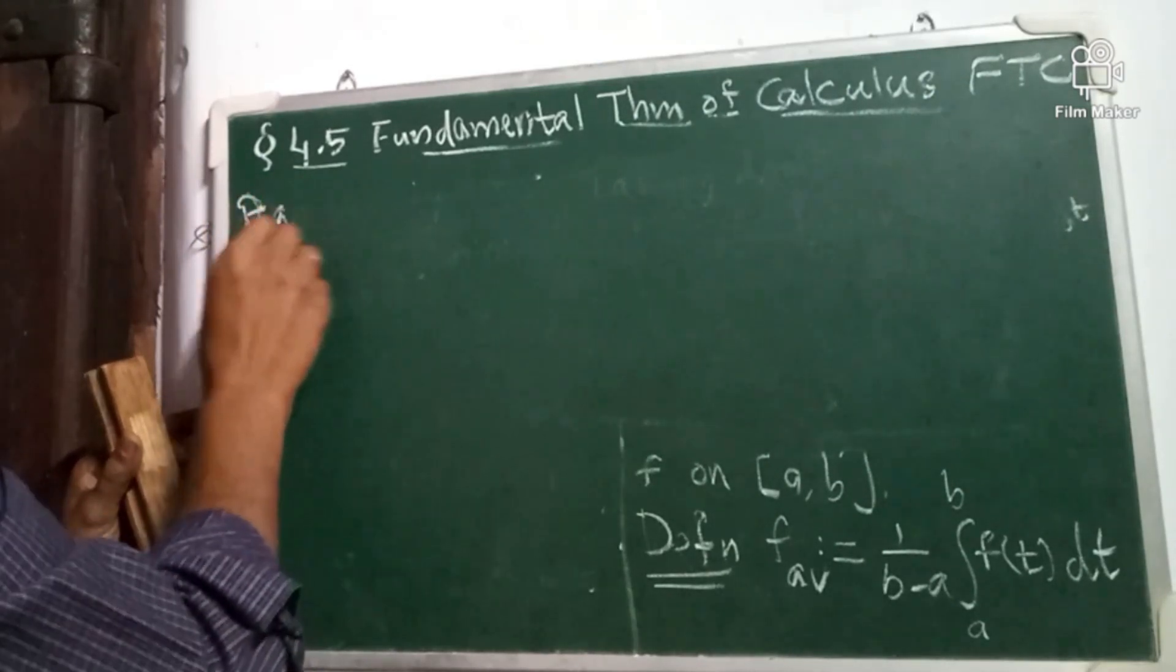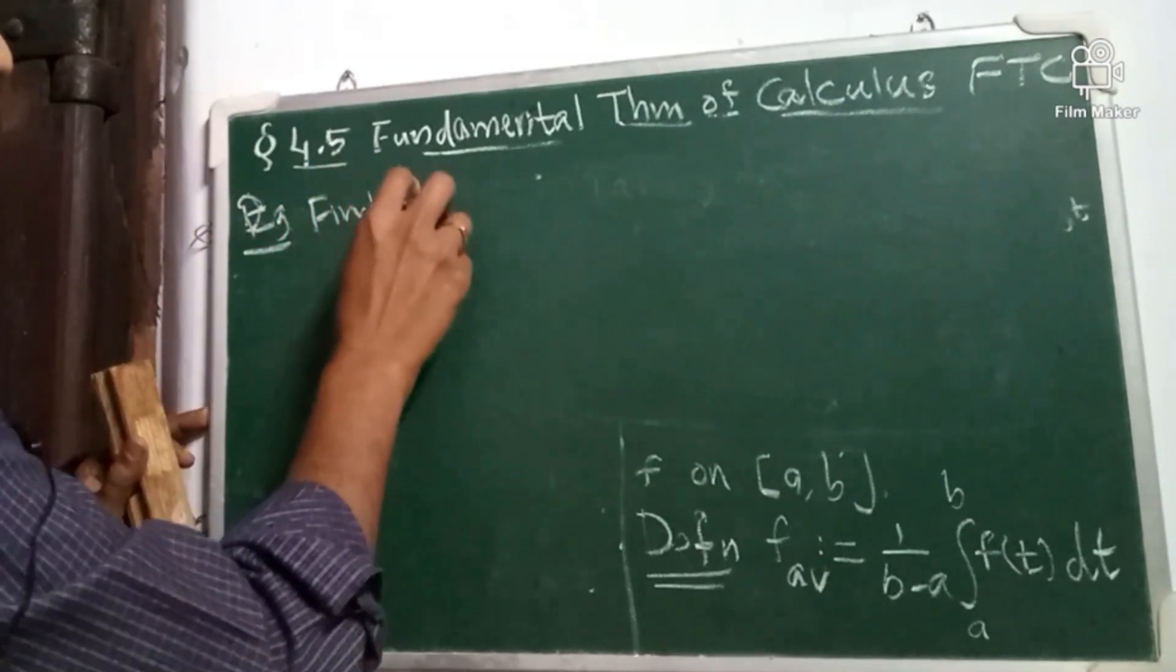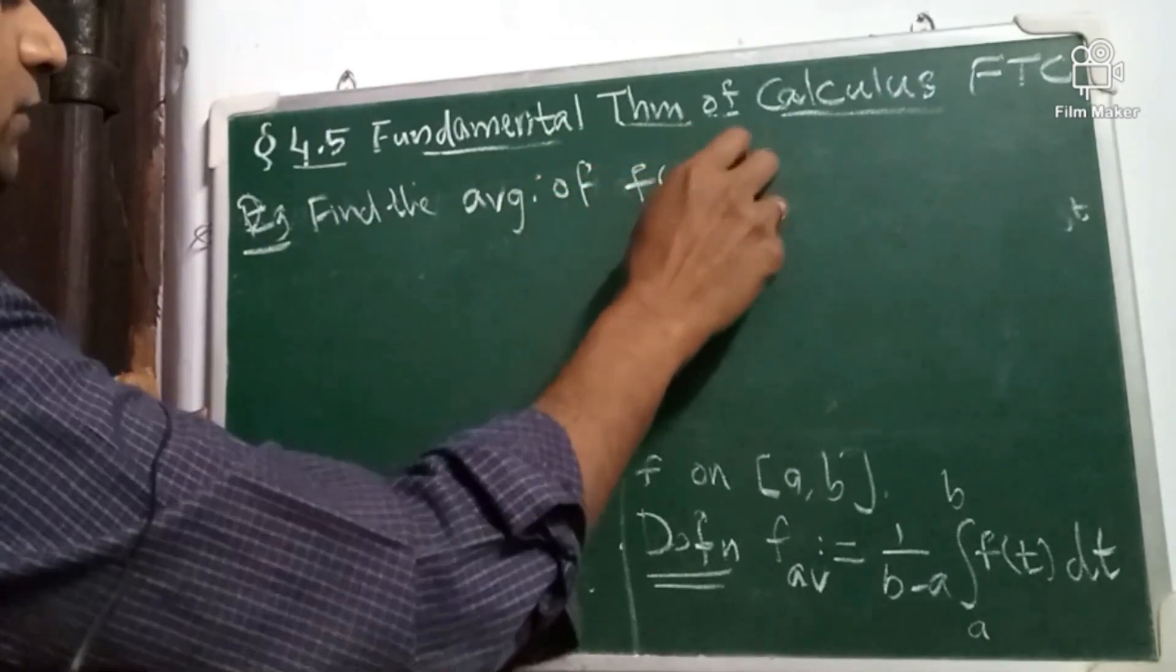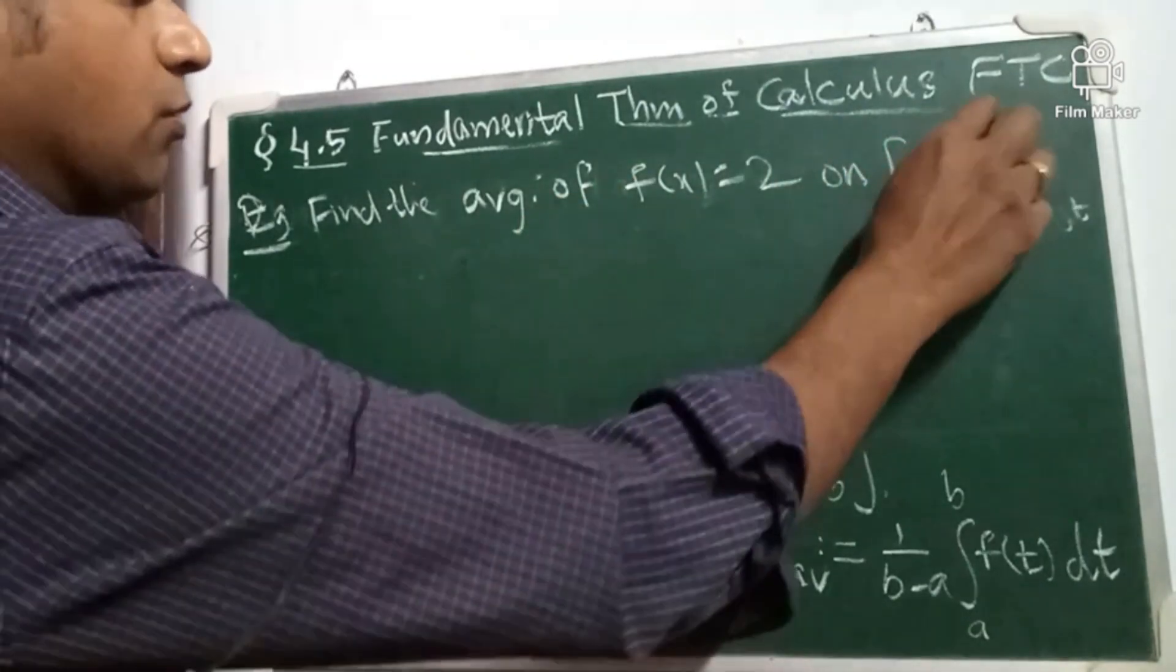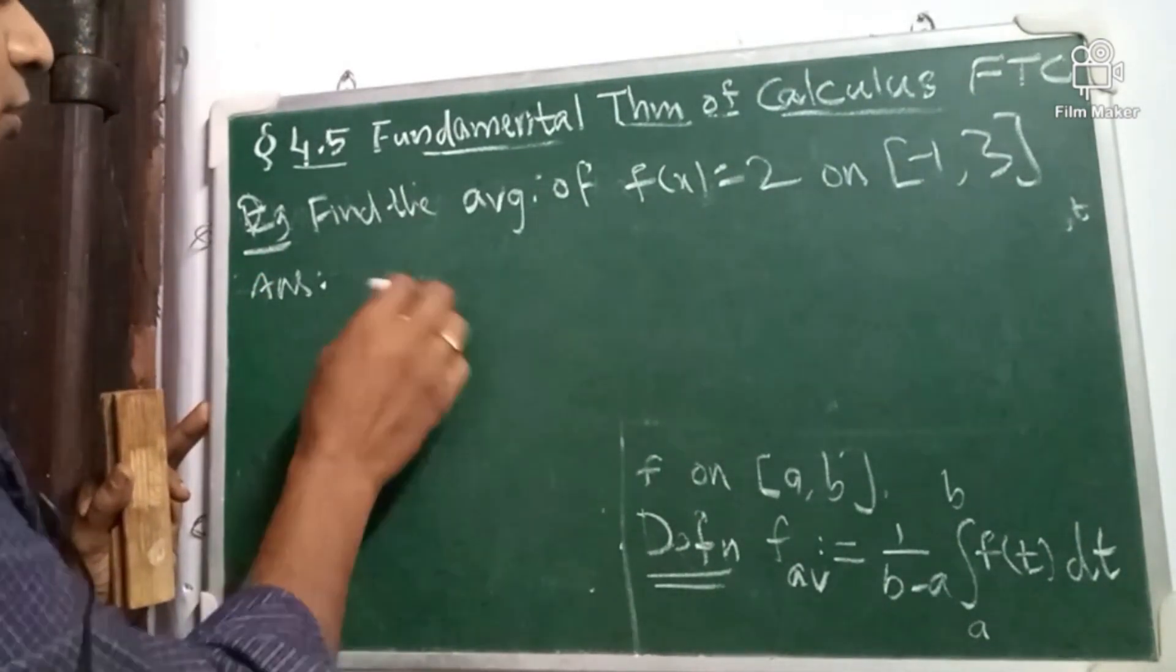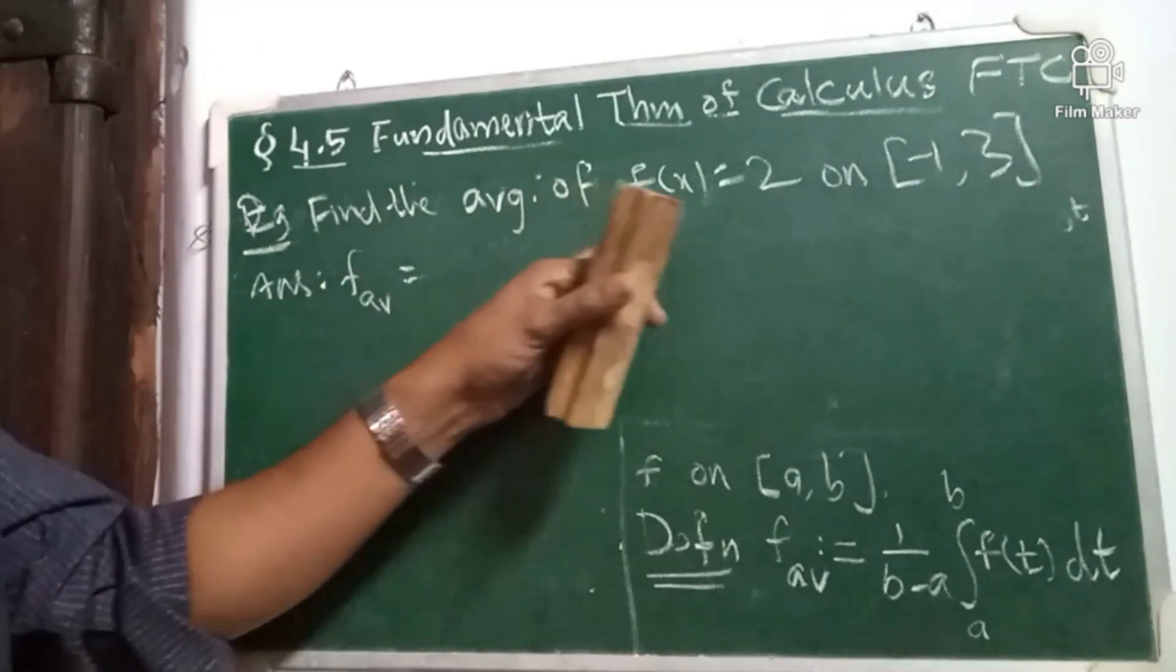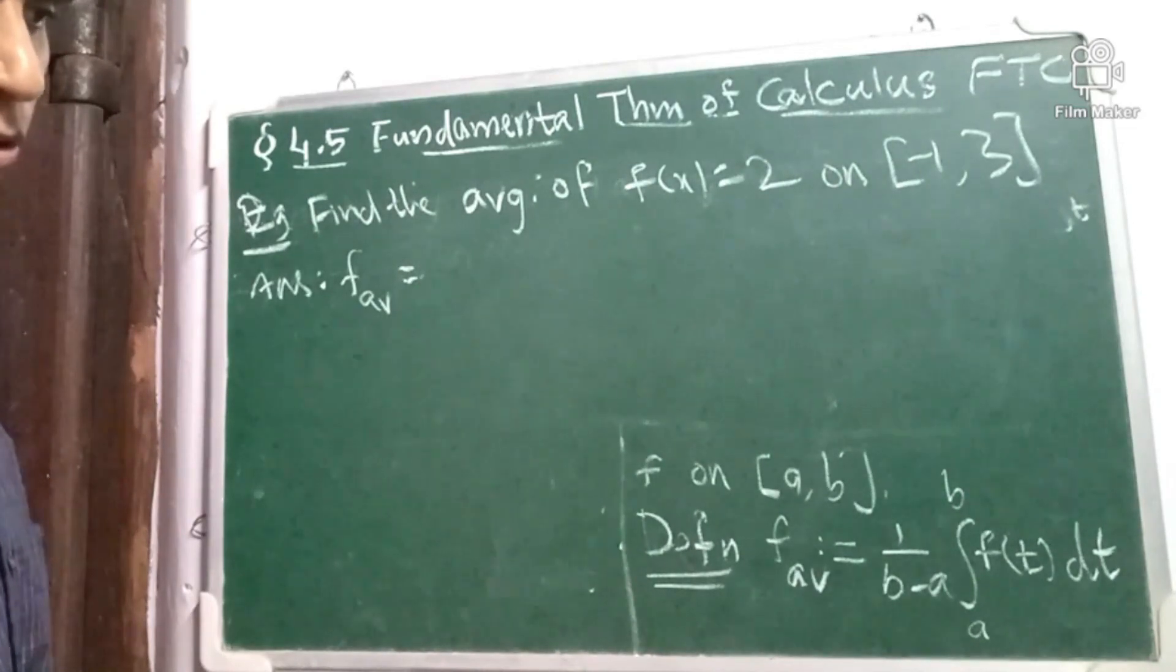For example, find the average of f(x) = 2 on the interval, let us say, -1 to 3. So what is the answer? f average equal to either function or constant function. So what you expect as the average, will they change into function? No, there is no change.